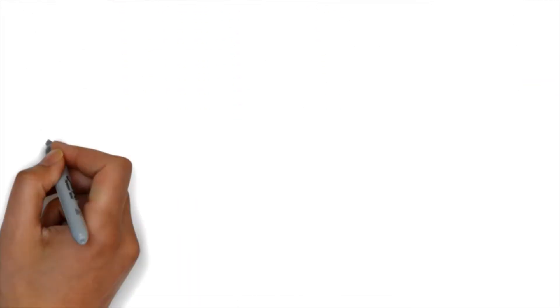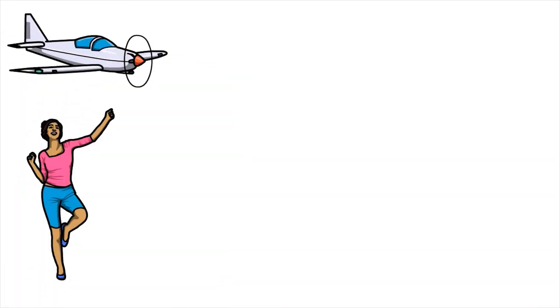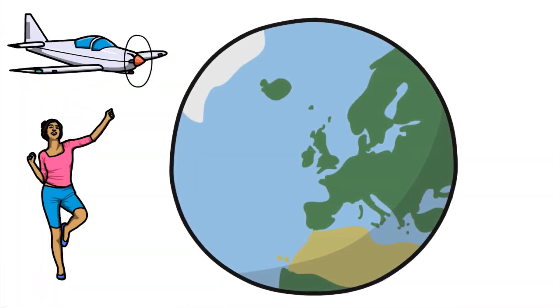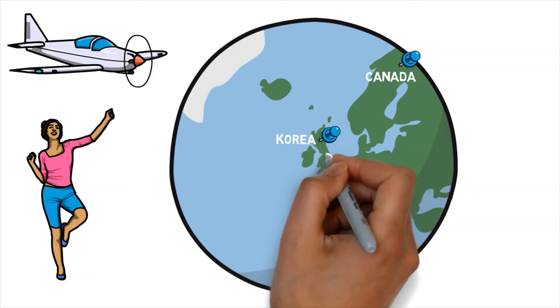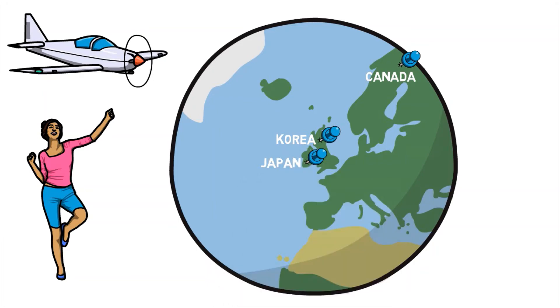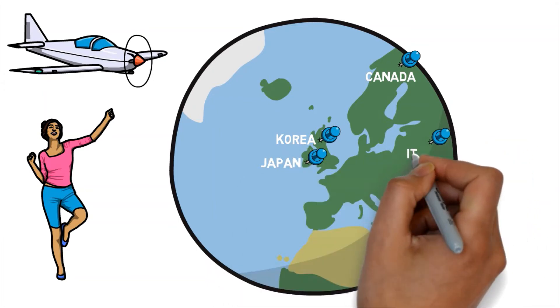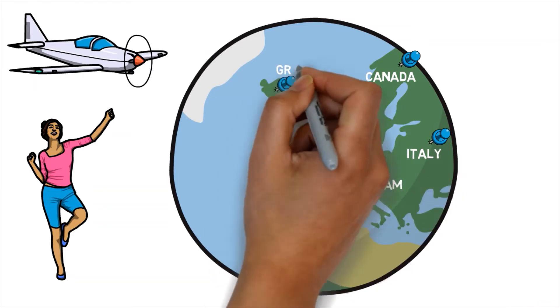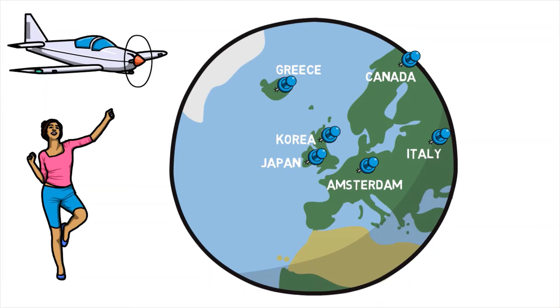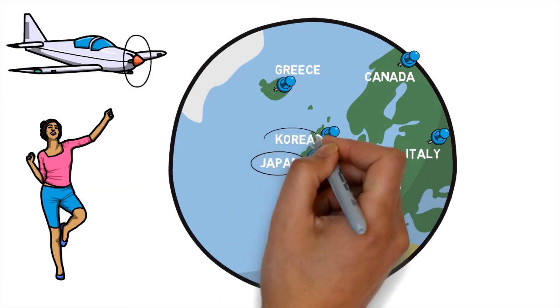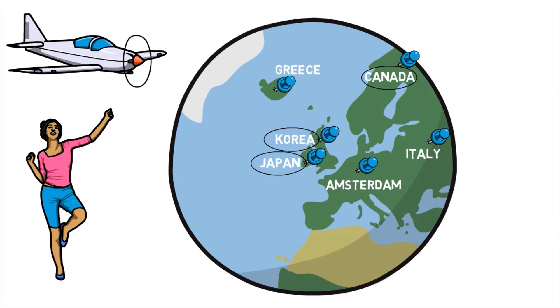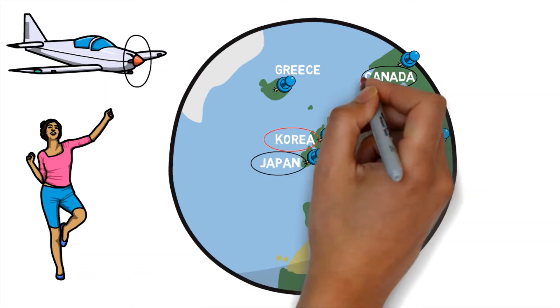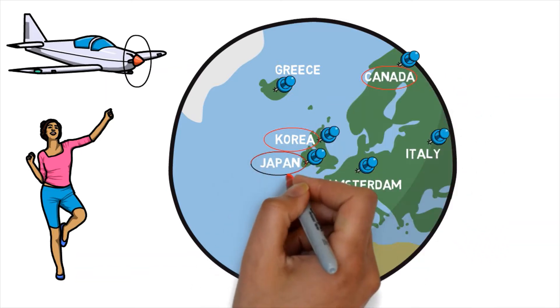If after the pandemic, you were given the privilege to travel to three countries with choices from Canada, Korea, Japan, Italy, Amsterdam, and Greece. If you choose to travel to Japan, Korea, and Canada, does it make any difference if you choose Korea, Canada, and Japan?